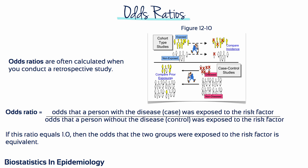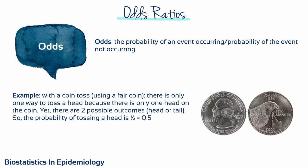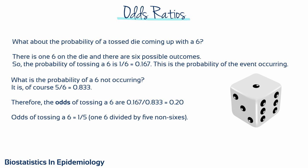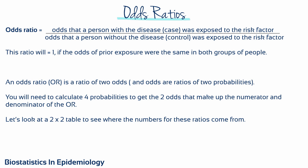Obviously, if this ratio equals 1, then the odds that the two groups were exposed to the risk factor are equivalent. To calculate an odds ratio, we first need to understand what odds are. Odds equals the probability of an event occurring divided by the probability of it not occurring. With a six-sided die, the probability of tossing a 6 is 1/6, which is 0.167. The probability of not tossing a 6 is 5/6, which is 0.833. Therefore, the odds of tossing a 6 are 0.167 divided by 0.833, which equals 20%. An odds ratio is a ratio of two odds, and odds are ratios of two probabilities — so we need four probabilities to get the two odds that make up the numerator and denominator. Let's look at a two-by-two table.